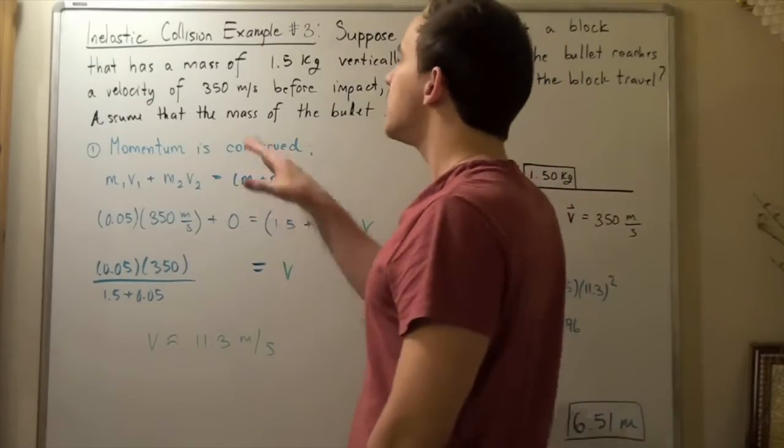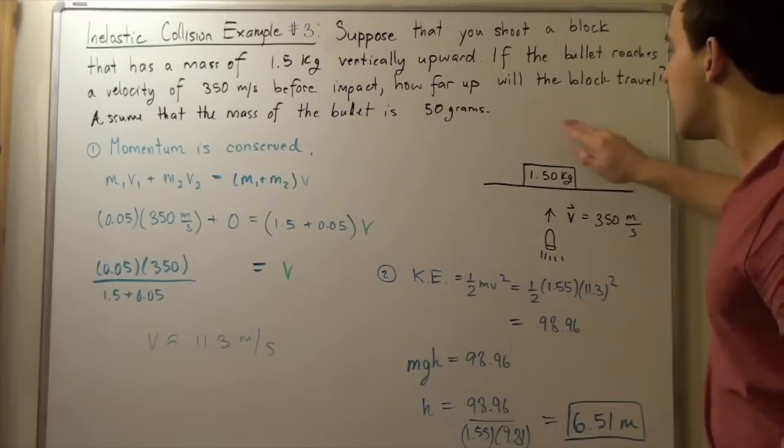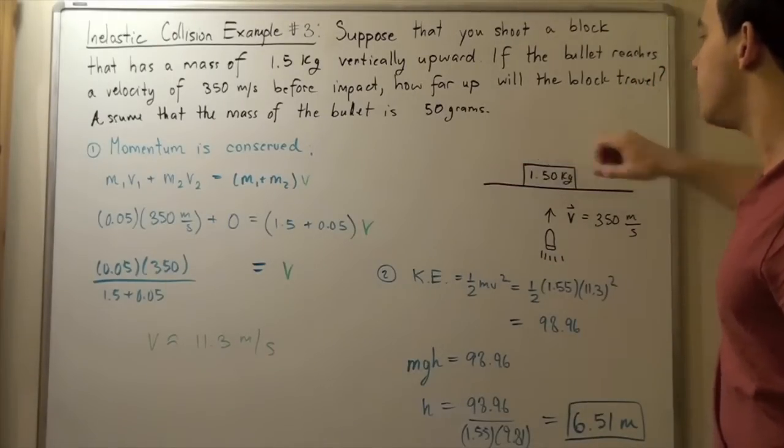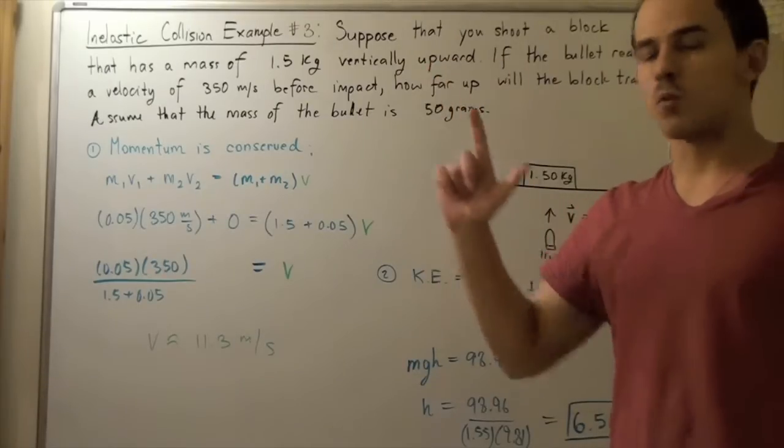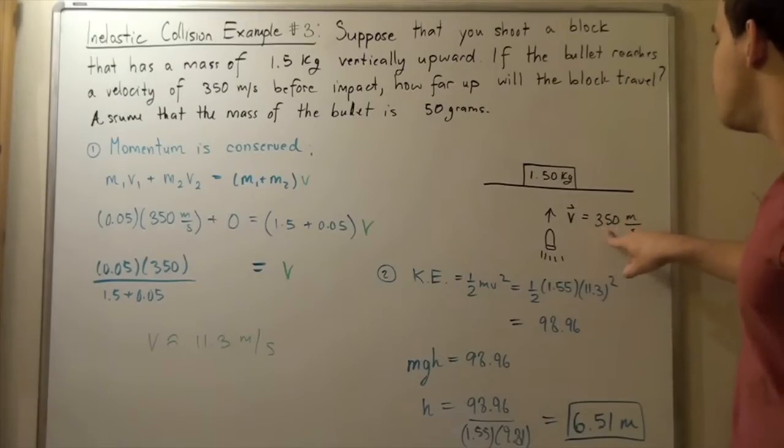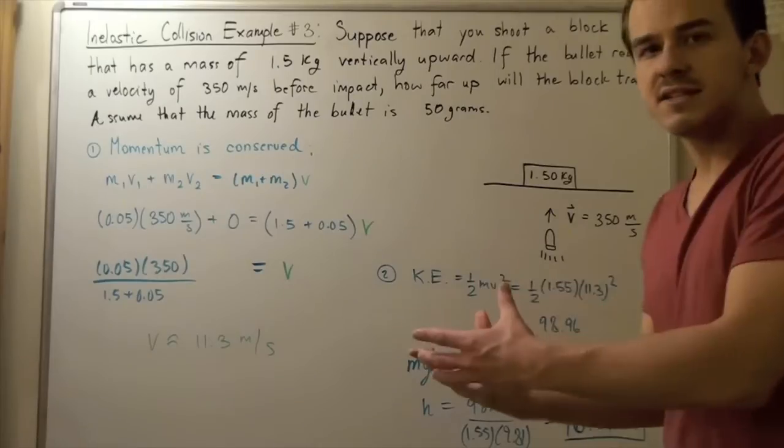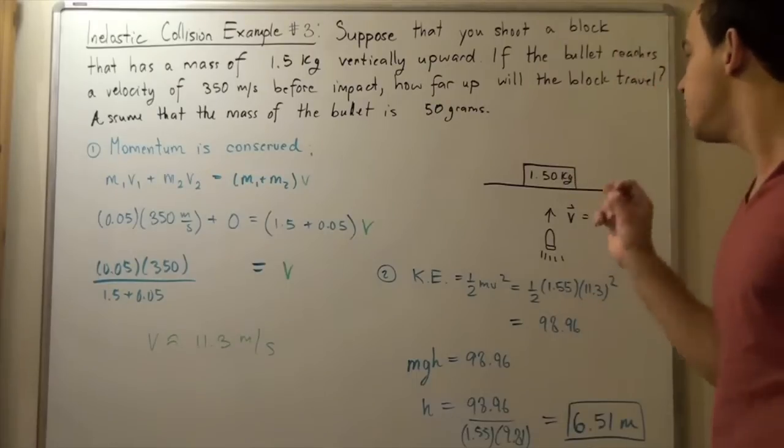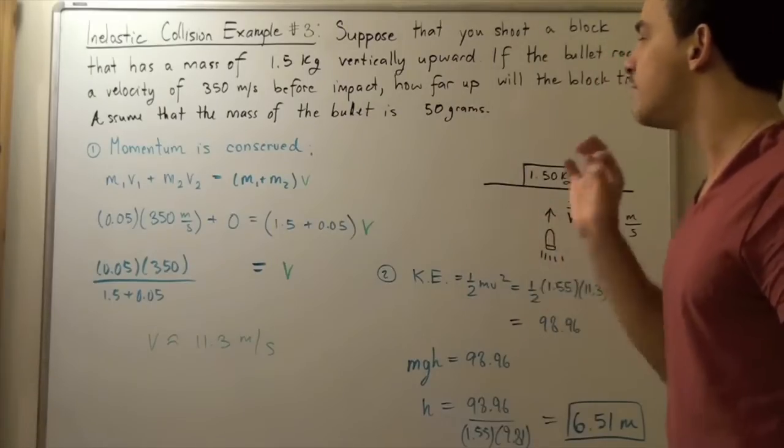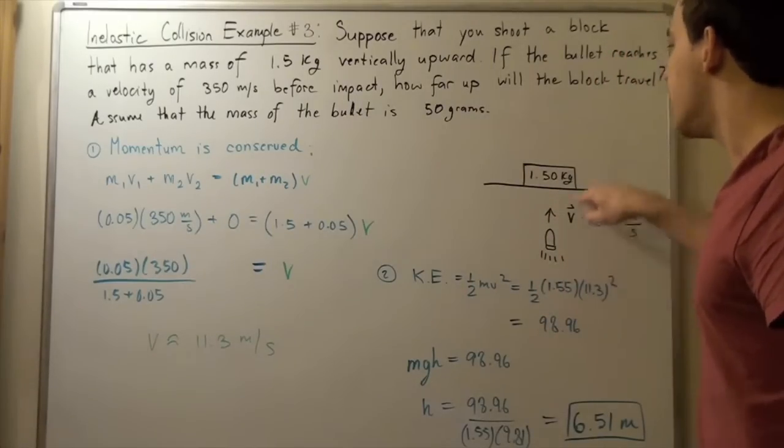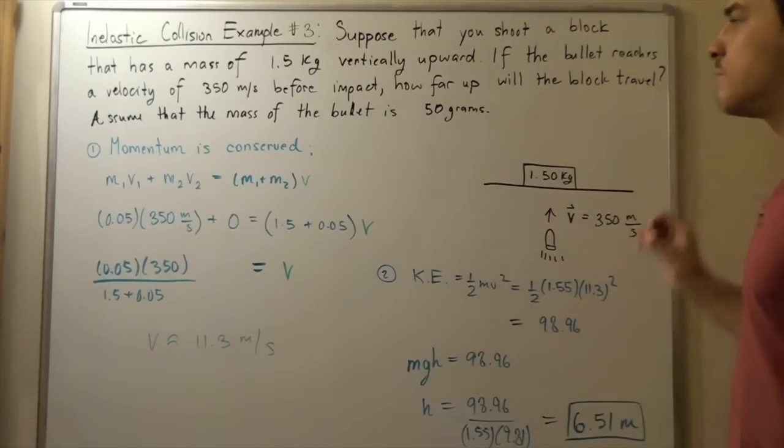We're going to make the assumption that the mass of the bullet is 50 grams. We have a block on the ground that has a mass of 1.5 kilograms. We take a gun and shoot our block vertically upward. Our bullet reaches a velocity of 350 meters per second before hitting the block, and the final system is the block with the bullet embedded inside. We want to find the maximum height our bullet and block system travels before it begins moving downward.